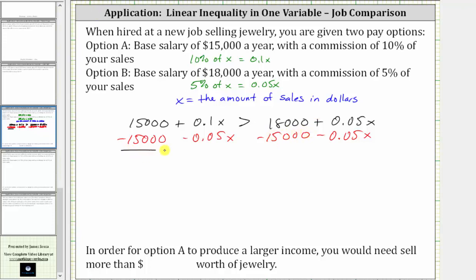Now let's simplify. 15,000 minus 15,000 is zero. 0.1x minus 0.05x is equal to 0.05x, which is greater than. On the right side, 18,000 minus 15,000 is 3,000. And 0.05x minus 0.05x is zero.